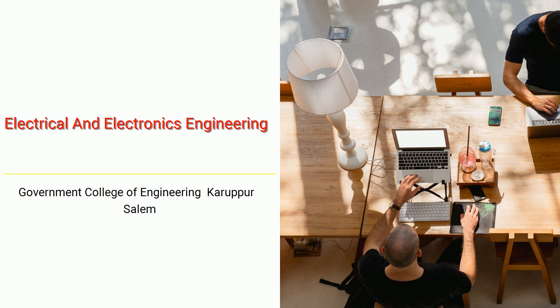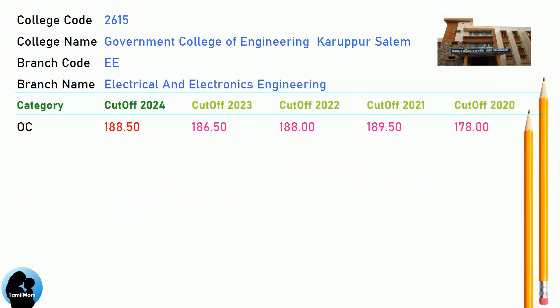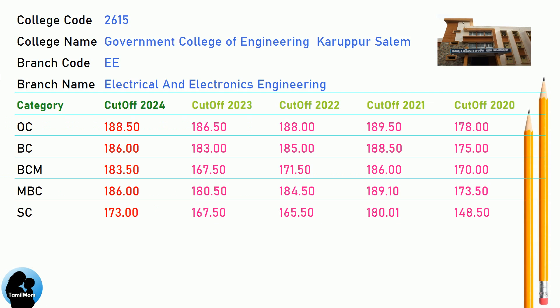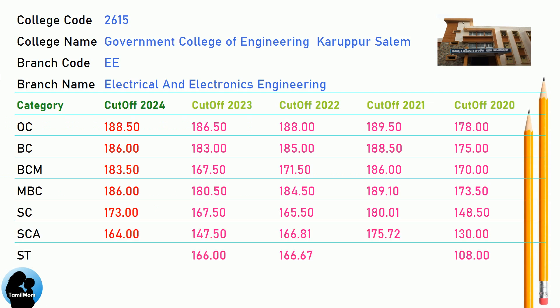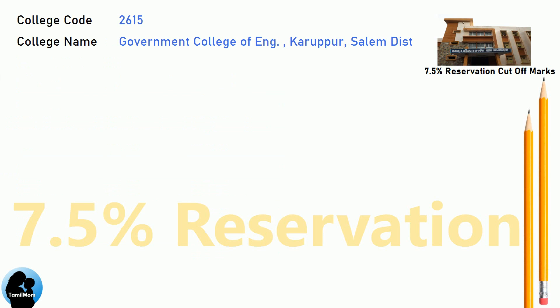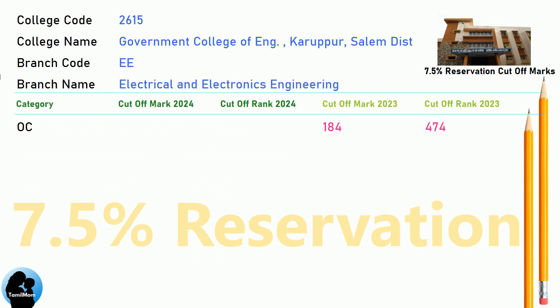BNEA Cut-off for Government College of Engineering, Karupur, Salem in Electrical and Electronics Engineering. BNEA 7.5 Reservation Cut-off for Government College of Engineering, Karupur, Salem District in Electrical and Electronics Engineering.